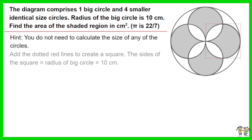Add the dotted red lines to create a square as shown on the diagram. The size of the square equals the radius of the big circle, which equals 10 cm.